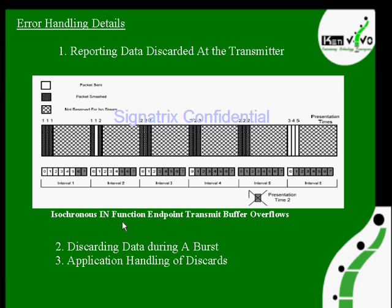During that time, which buffer — the device-side buffer — we are going to consider. In the device-side buffer, what will happen: a blank indicates packet sent, and this kind of box indicates not reserved for the stream. So what's happening here — interval one, interval two, three, four — it's going on, and this one is smashed.